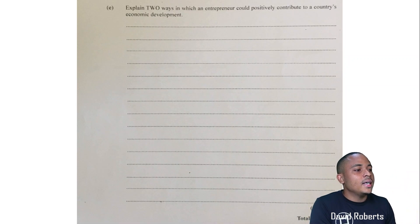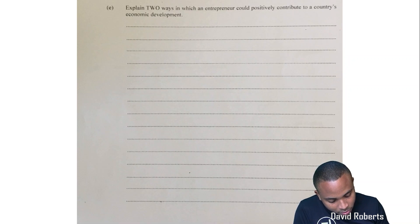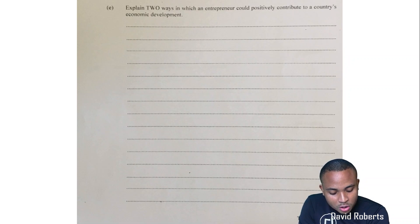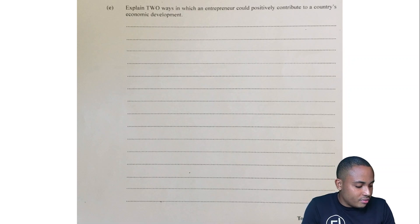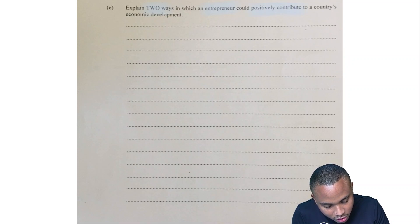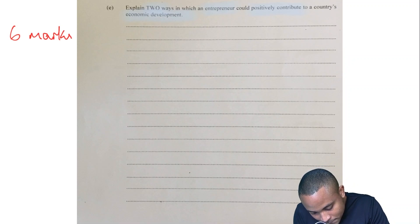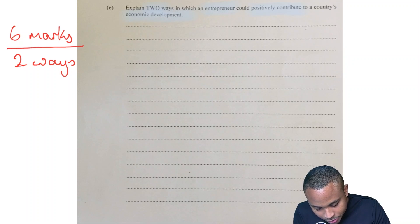We reach into part e, and this is where CSEC hit them with a six-mark question. Part e: explain two ways in which an entrepreneur could positively contribute to our country's economic development. We do the maths: six marks divided by two ways equals three marks per way. The ways themselves are given in the syllabus, but the descriptions require understanding from your classes.